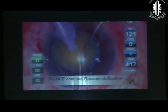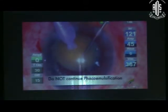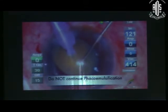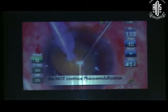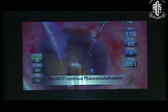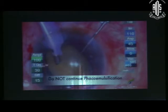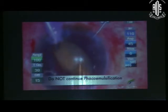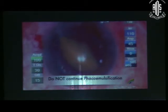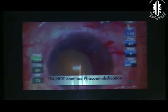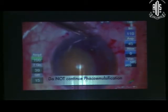Number 2: Do not continue phacoemulsification in PCR. In PCR happening early during phacoemulsification with more nucleus still present, do not continue phacoemulsification. Instead, convert to a manual small incision cataract surgery.